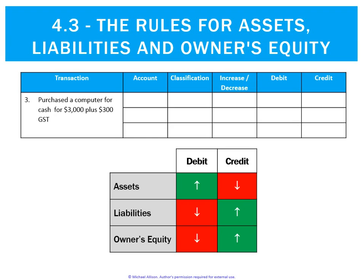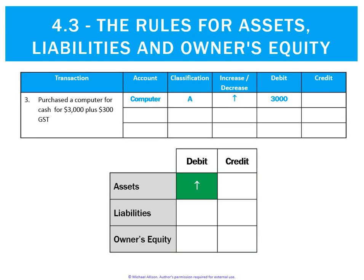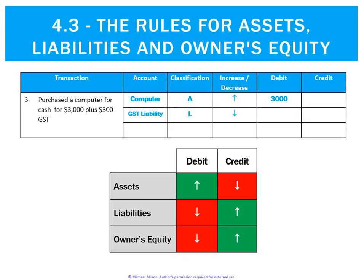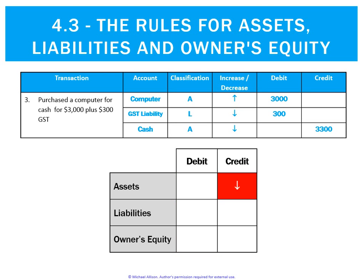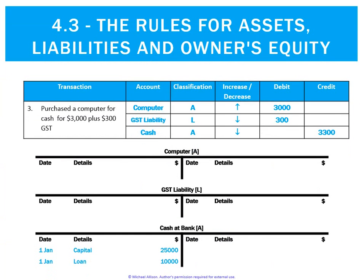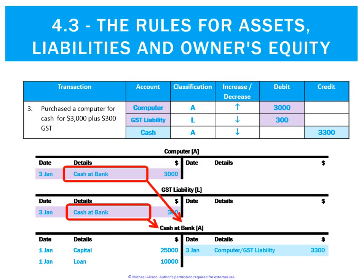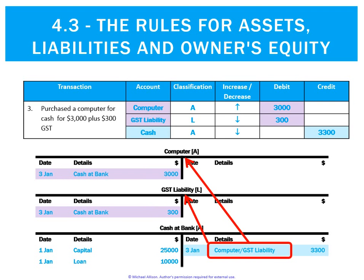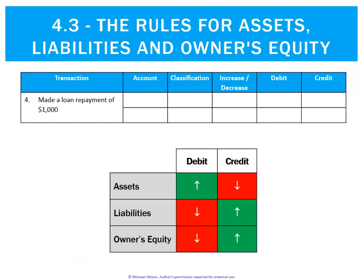Third transaction: purchased a computer for $3,000 cash plus GST. The computer is an asset increasing — that's a debit. GST paid decreases the GST liability, so that's also a debit. Cash is an asset decreasing — assets decrease on the credit side. Here we have two debits making up one credit, and that's fine as long as there's at least one debit and one credit. Posting: debit to computers, debit to GST liability, credit to cash at bank. In the cash at bank ledger there's a double reference — $3,000 to the computer ledger and $300 to the GST ledger.